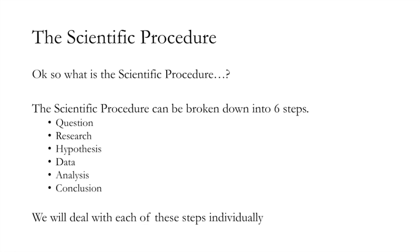So what is the scientific procedure? It can be broken down into six main steps: number one, question; number two, research; number three, hypothesis; number four, data; number five, analysis; and finally, number six, conclusion. We will deal with each of these steps individually. In today's lecture, we will discuss the first two steps of the scientific procedure: question and research.